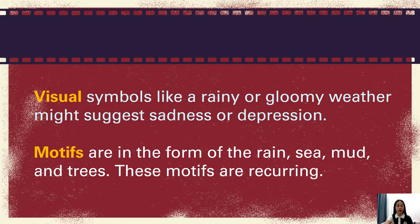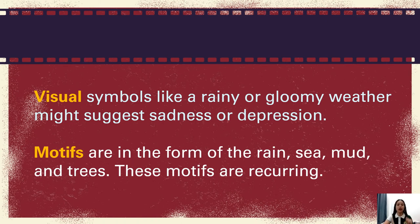Visual symbols, like rainy or gloomy weather, might suggest sadness or depression. Motifs in the form of rain, sea, mud, and trees are recurring or repeating elements. A physical as well as emotional or mental journey forms the basis of the structure of film narrative. Symbols and motifs unify narratives.